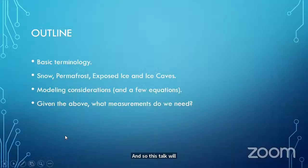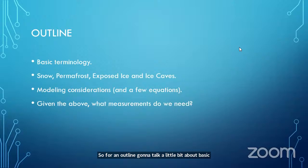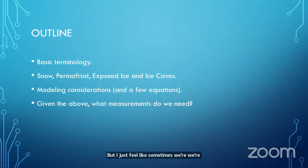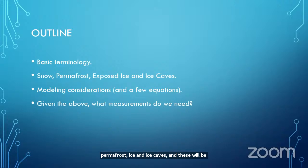For an outline, I'm going to talk about basic terminology — I apologize for the folks who will find this perhaps a little bit unnecessary, but I feel like sometimes we're not always on the same page. Then I'll go on to some examples of planetary snow, permafrost, ice, and ice caves, heavily skewed towards Earth, though I will mention Mars as well. Then some of the modeling, where you'll see the equations, and finally what measurements do we need.